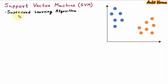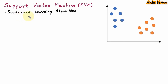In supervised learning, we have knowledge of input and output, we have labeled data and we have a trainer. Support vector machine identifies the optimal hyperplane.